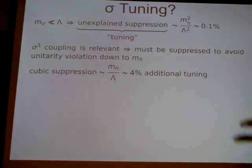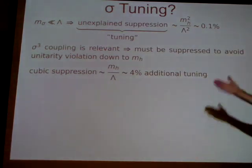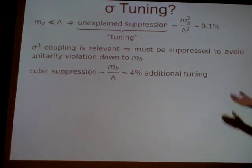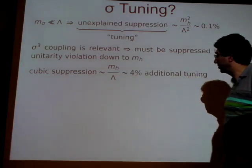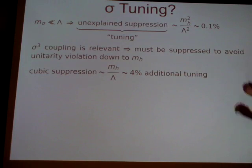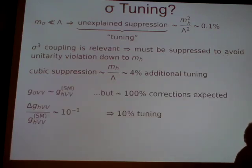But there's actually more than this. In addition to getting the mass light enough, you also need to make sure that the cubic coupling is not too large. The cubic coupling is a relevant perturbation, and it has to be suppressed even to just avoid unitarity violation down to the scale m_H of this resonance. That means this cubic coupling has to be suppressed by about 4% compared to its expected value, just requiring that it doesn't violate unitarity at the scale m_H.